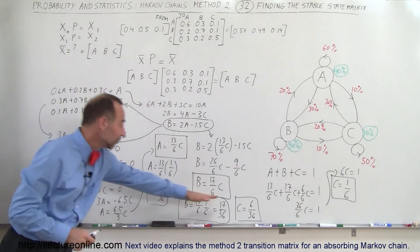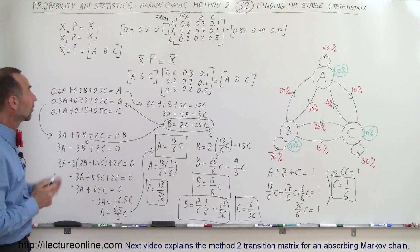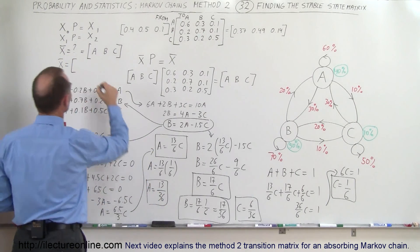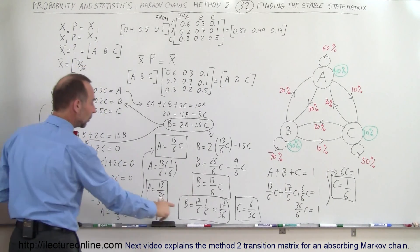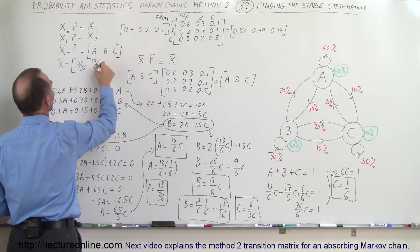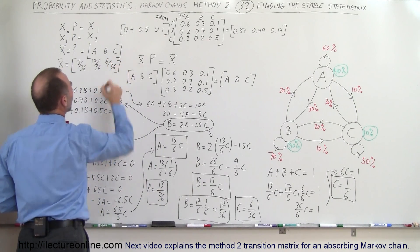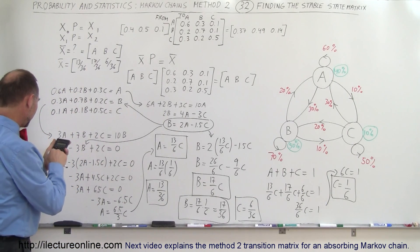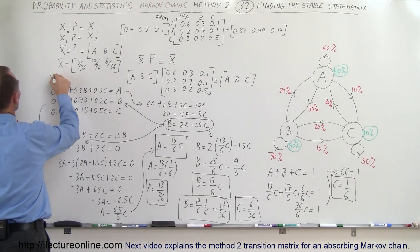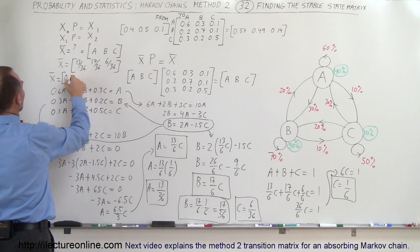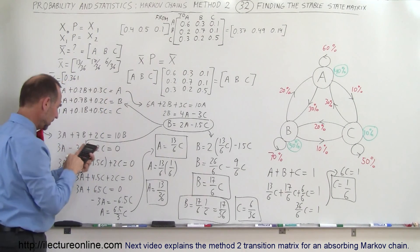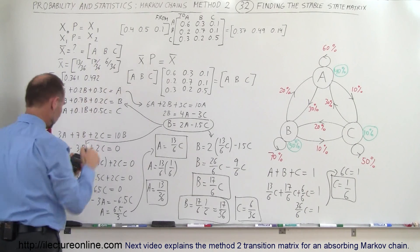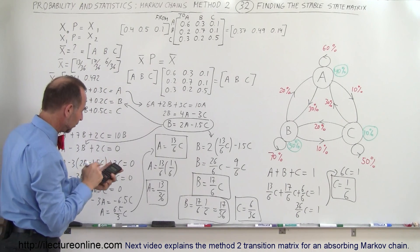We now have all three elements of the final stable state matrix. A = 13/36, B = 17/36, C = 6/36. Converting to decimals: 13 ÷ 36 = 0.361, 17 ÷ 36 = 0.472, and 1 ÷ 6 = 0.167. So the stable state matrix is [0.361, 0.472, 0.167].